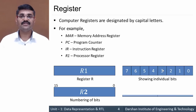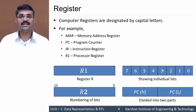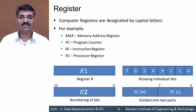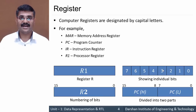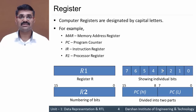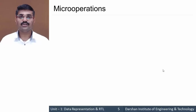A register can also be divided into two parts: higher order and lower order. For example, the PC register is divided into bits 0 to 7, called PC(L) for lower, and bits 8 to 15, called PC(H) for higher. This is how register organization works in computer organization, and registers can be represented in various ways in RTL.